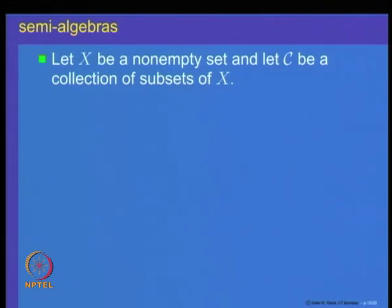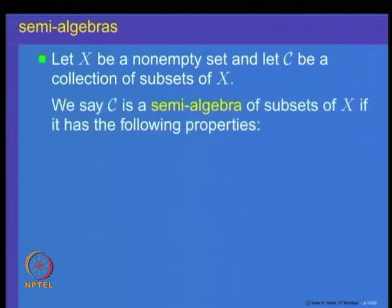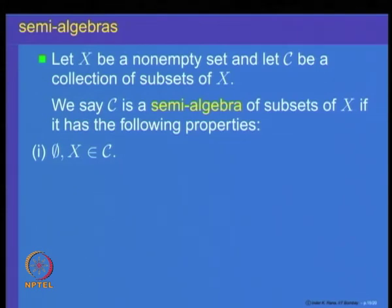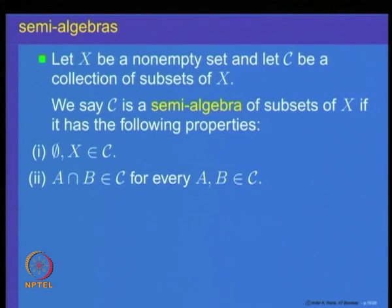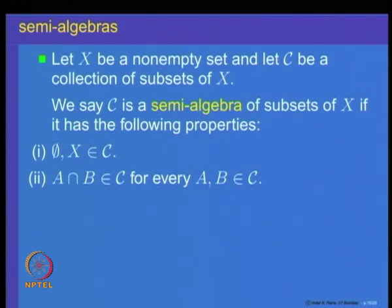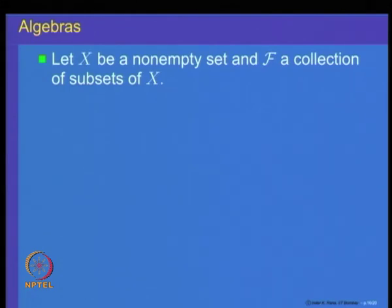Let X be a nonempty set and let C be a collection of subsets of X. We say that the class C is a semi-algebra of subsets of X if it has the following properties. First, the empty set and the whole space X are members of this class. Second, this class is closed under intersections — if A and B are two elements of this collection, then A intersection B should also be a member of C. There is a third property, which we will describe shortly.